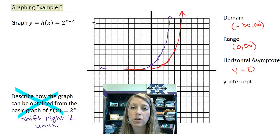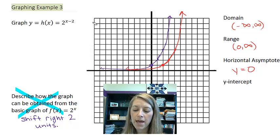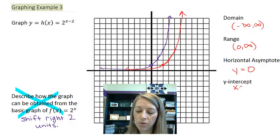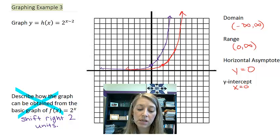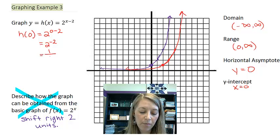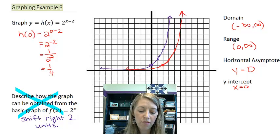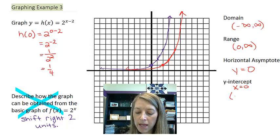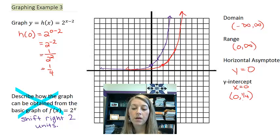My original intercept shifted right two units. So now where is my new intercept? So we might actually have to do a little bit of math here. We know our y-intercept happens when our x value is 0. So we just need to plug 0 into our function. So h of 0 is 2 to the 0 minus 2 or 2 to the negative 2. We know a negative exponent makes it flip. So 1 over 2 squared or 1 over 4. So our y-intercept is at 0, 1 fourth.